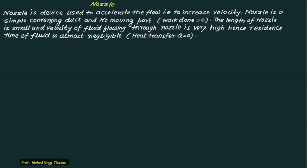We have seen the Rankine cycle and in the Rankine cycle the important components are the boiler, steam turbine, condenser, and the pump. In a steam turbine we have a nozzle. A nozzle is the device used to accelerate the flow, that is to increase the velocity, and a nozzle can consist of a converging duct, diverging duct, or both.